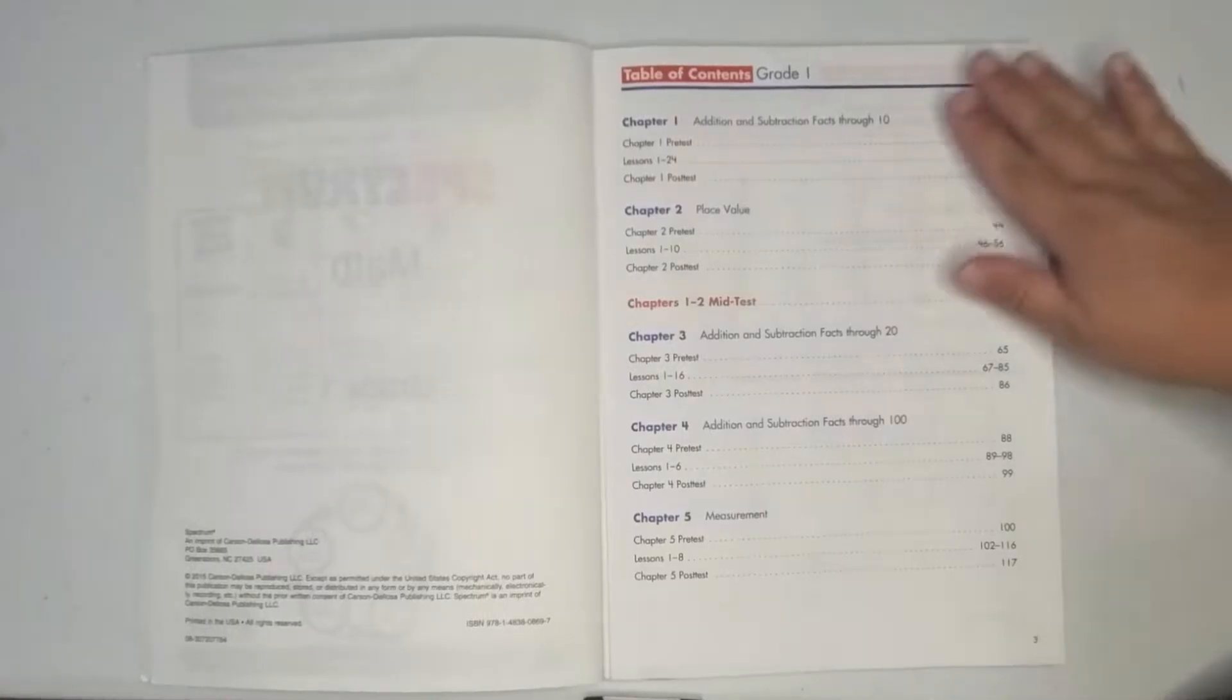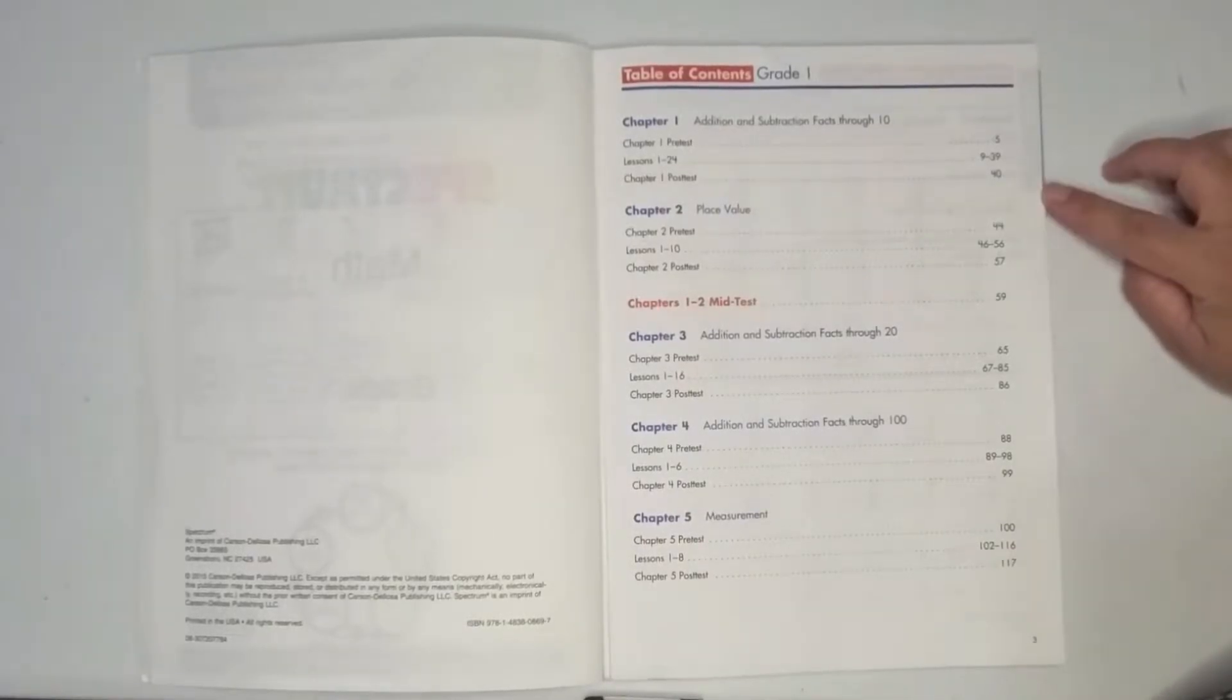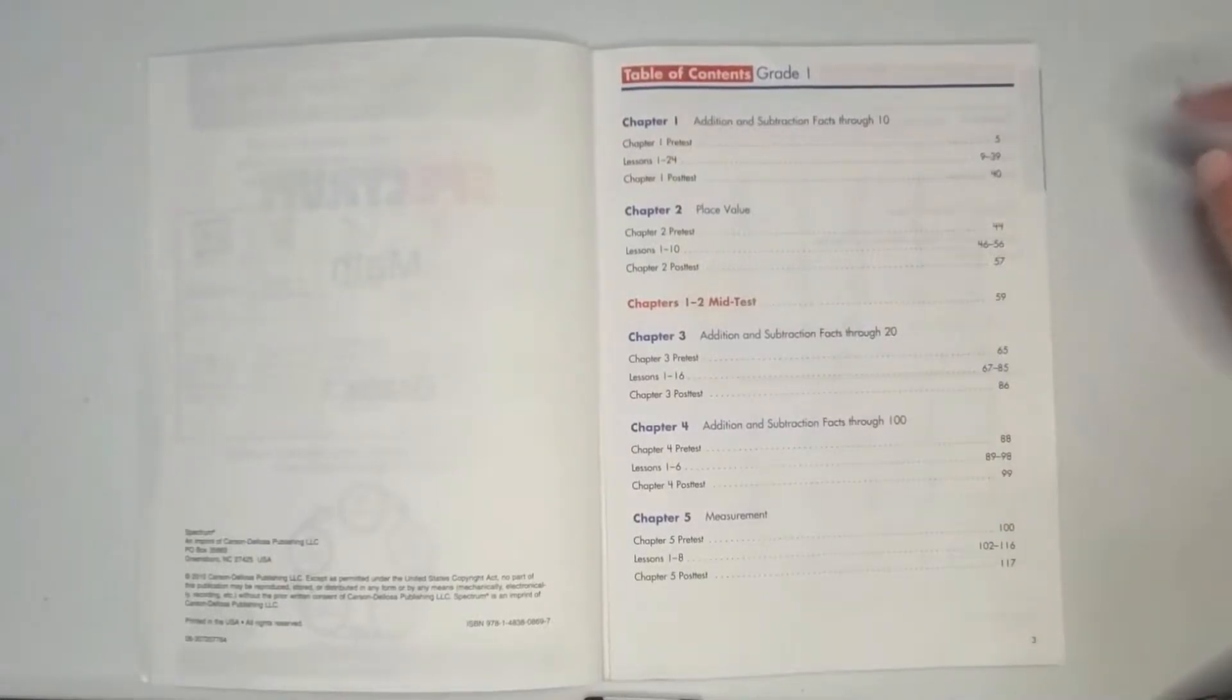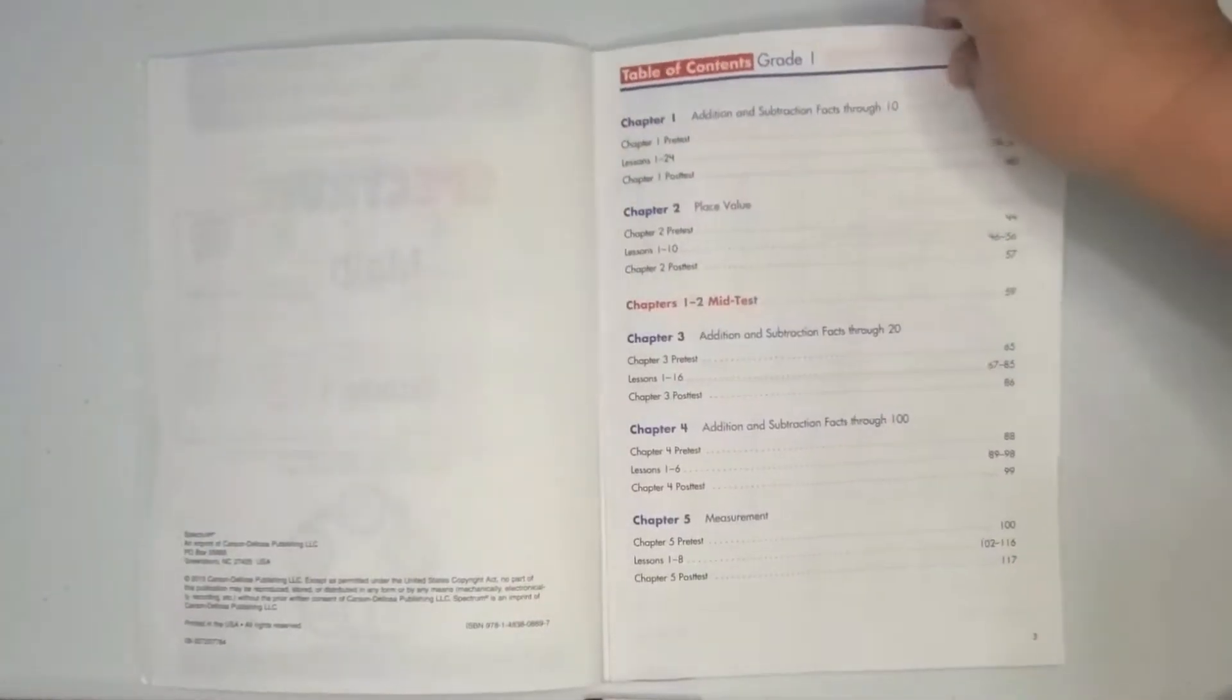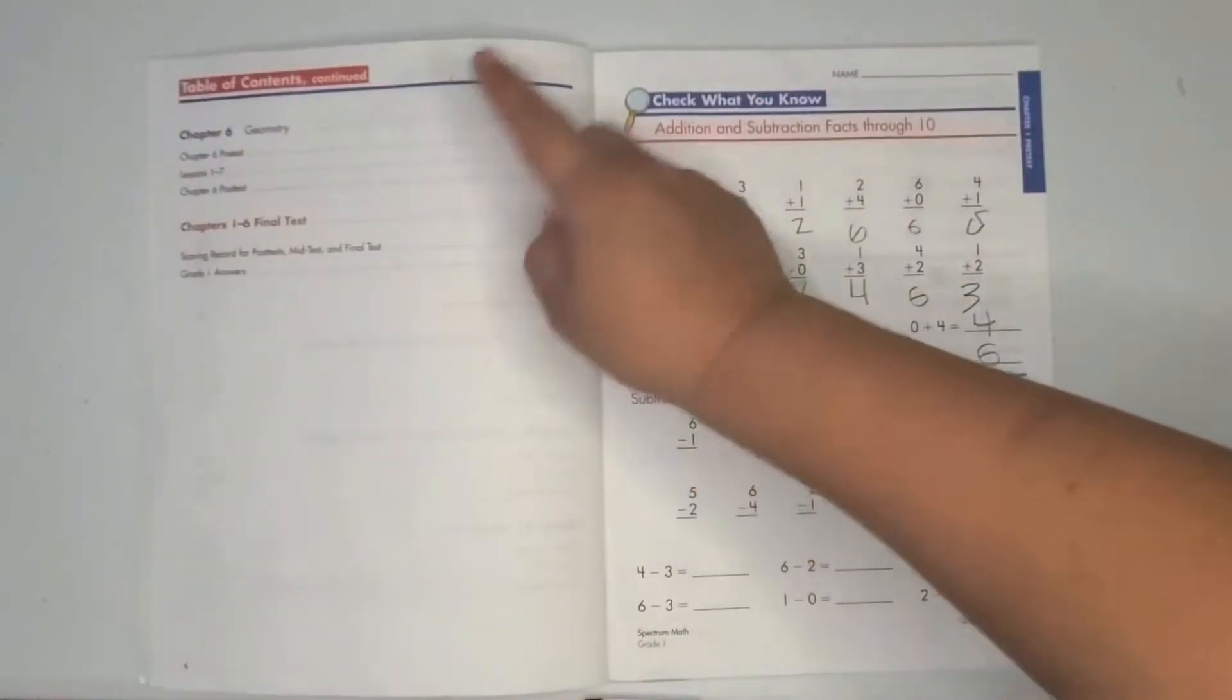Here is the table of contents. You have six chapters in this book, so you'll notice that there are a few that cover addition and subtraction facts starting with up to 10, then 20, and then 100. You have place values, you have measurements, and the last chapter would be geometry.